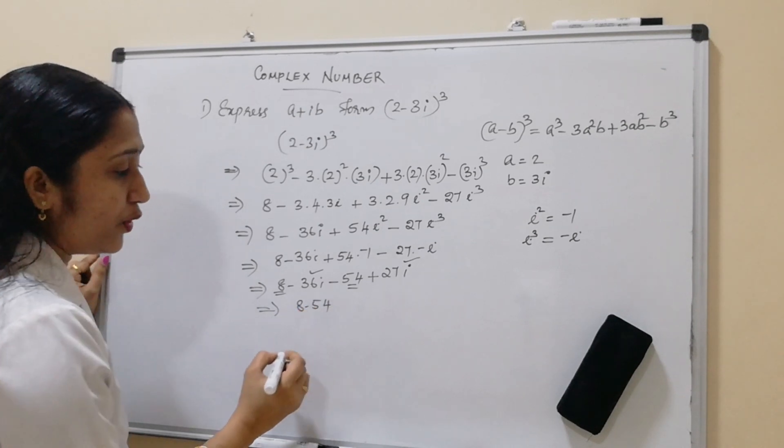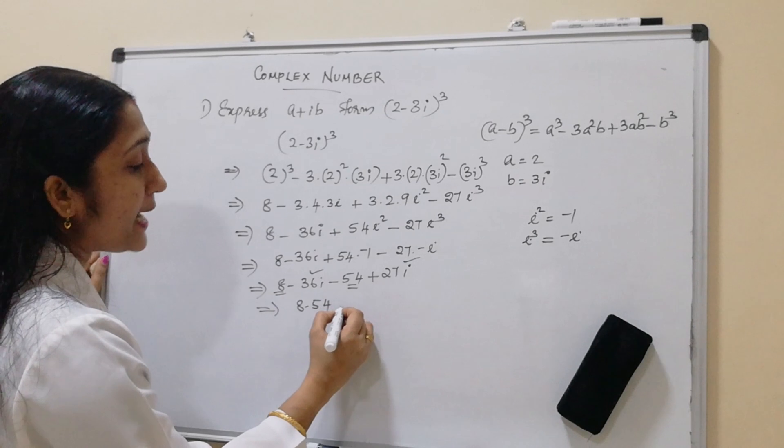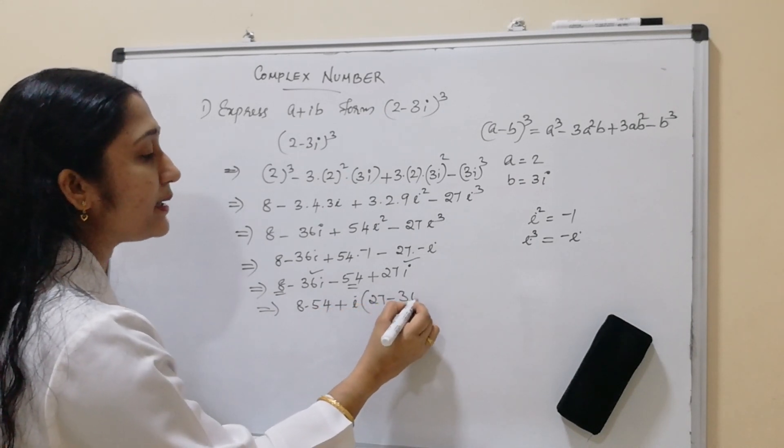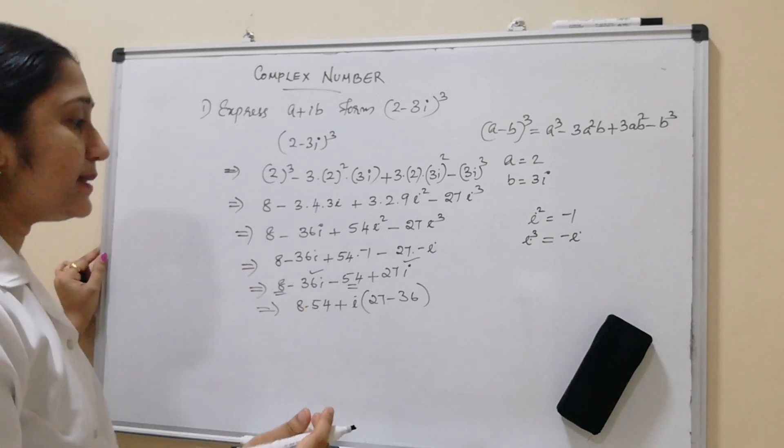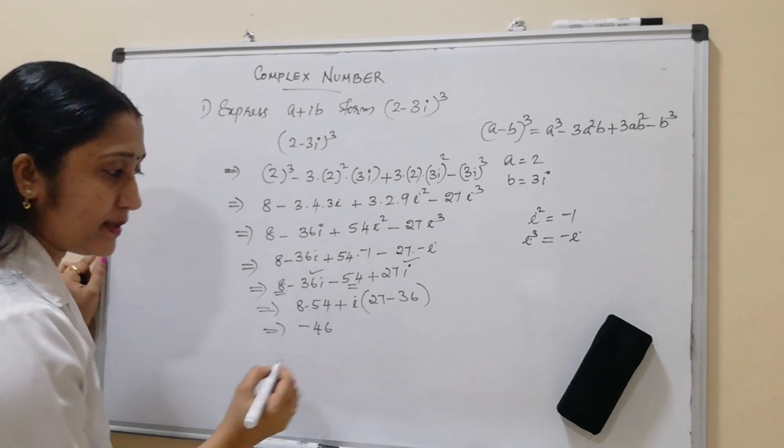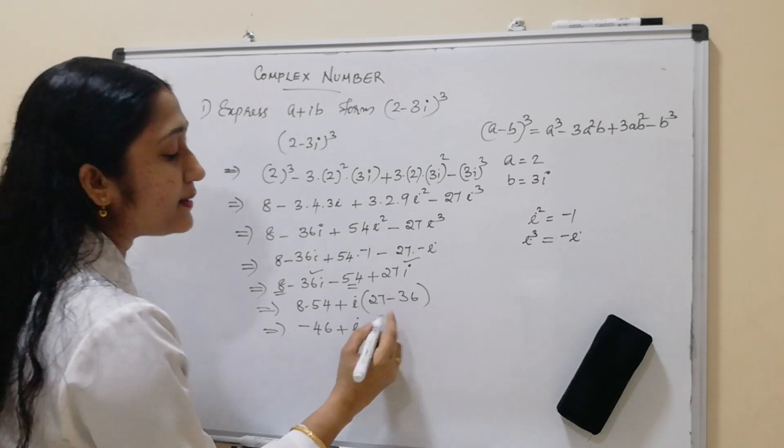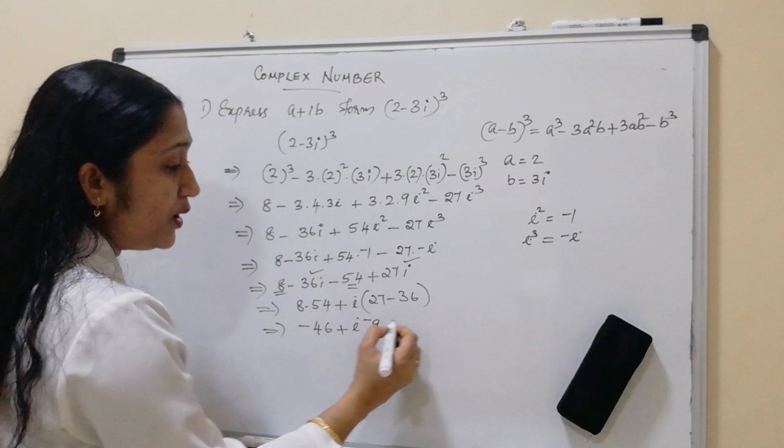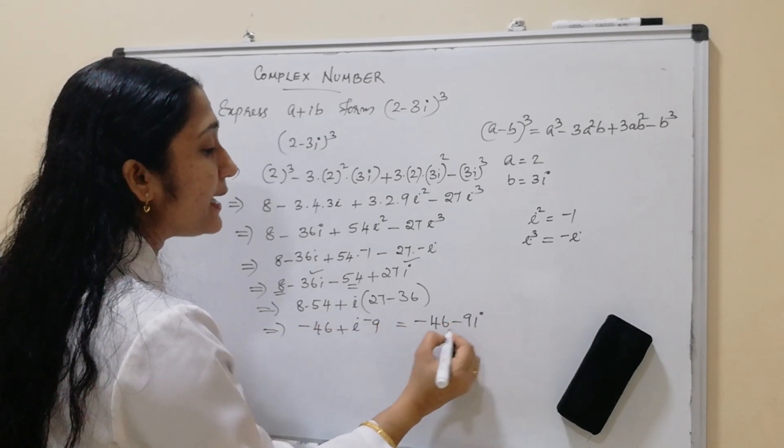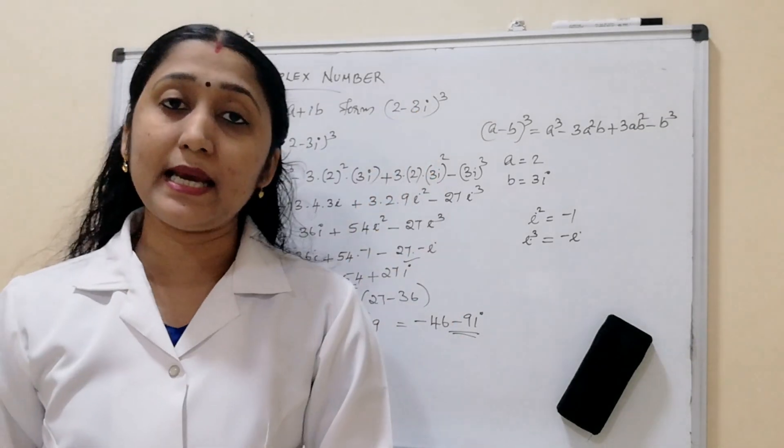8 minus 54, next here i into plus i into 27 minus 36. So let us see this here. 8 minus 54 is minus 46 plus i into 27 minus 36 is minus 9. So the answer becomes minus 46 minus 9i is the a plus ib form of 2 minus 3i whole cube.